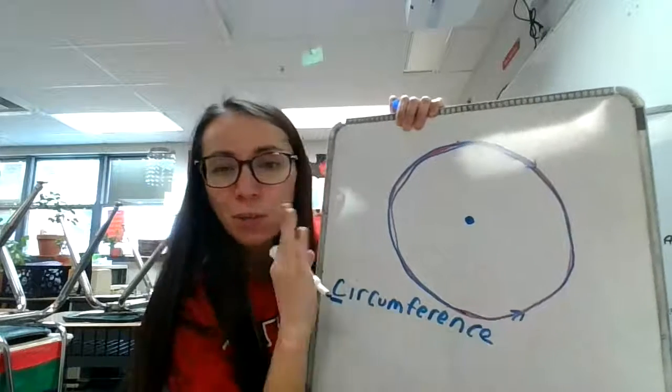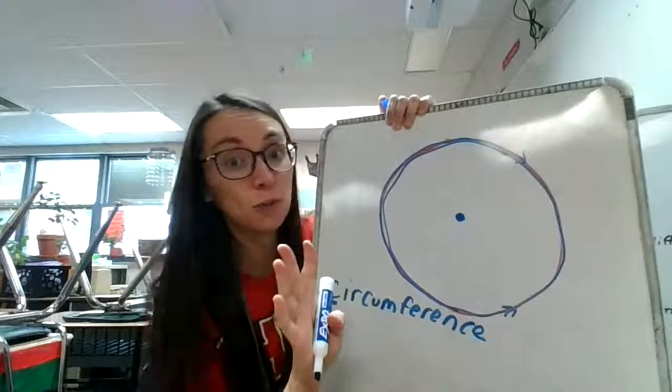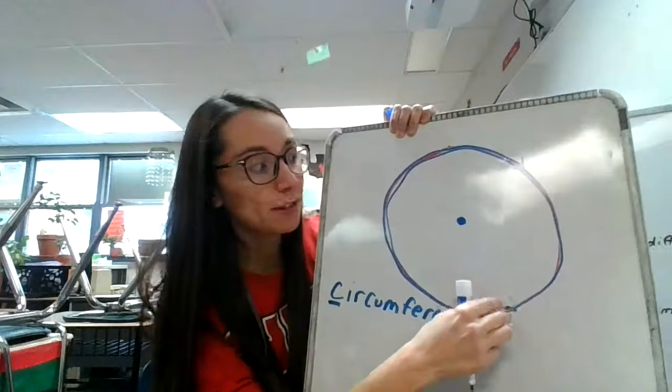You know, it's really the perimeter, but since it's a circle, it's like super special. We don't call it a perimeter. It's called the circumference.